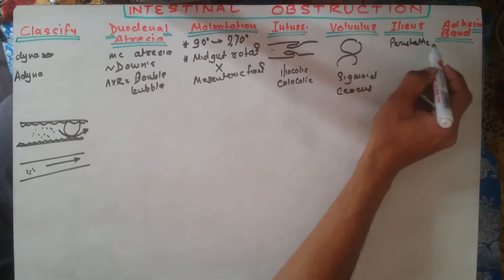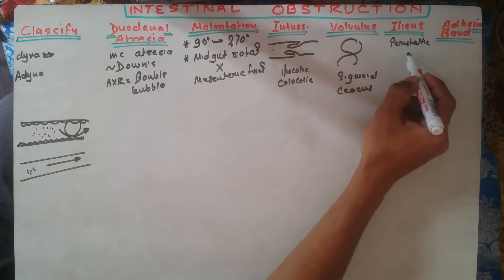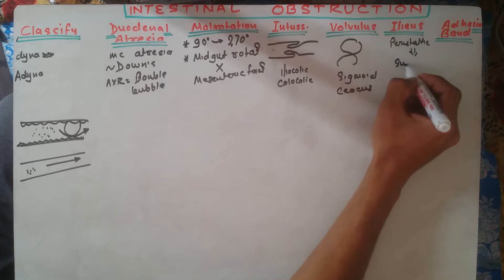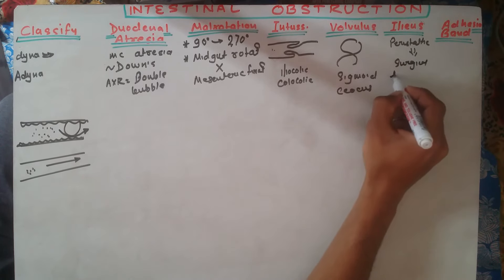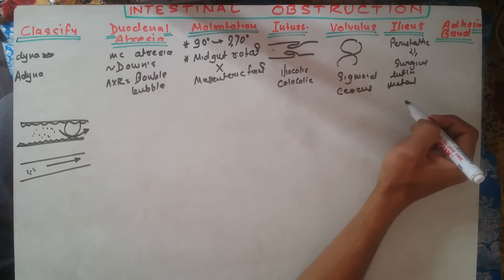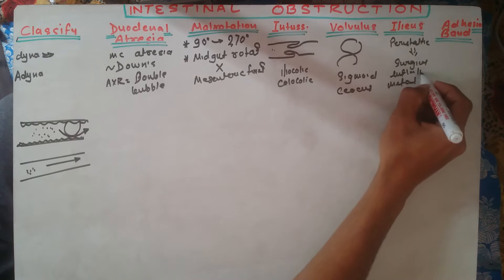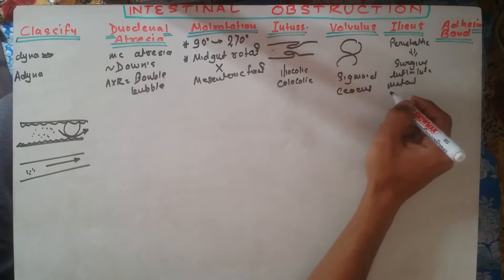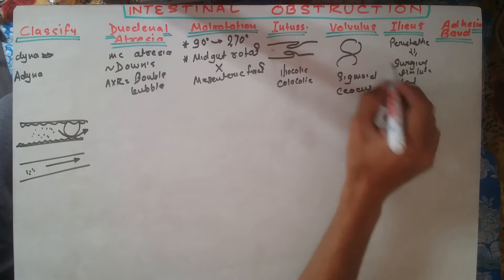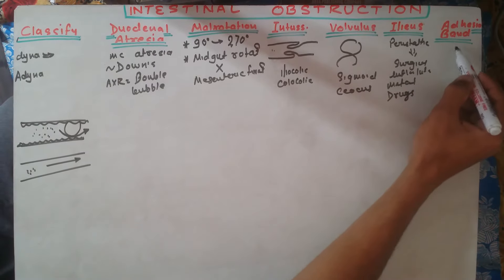Ileus results from absence of peristaltic movement due to metabolic or inflammatory causes, infection of the gut region, or post-surgical causes. Metabolic abnormalities include hypokalemia and hypomagnesemia, ketoacidosis, infection, and inflammation. Some drugs like opioids and antipsychotics can also cause ileus.